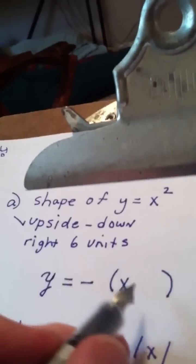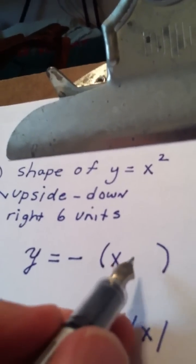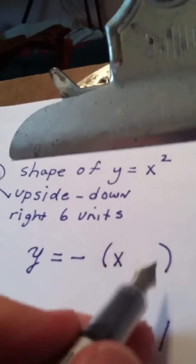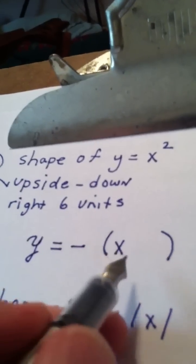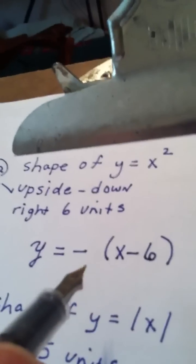Whenever you're moving to the left or right, the sign in here is just the opposite of what you think. So to the right six units, we're going to make this say x minus six.